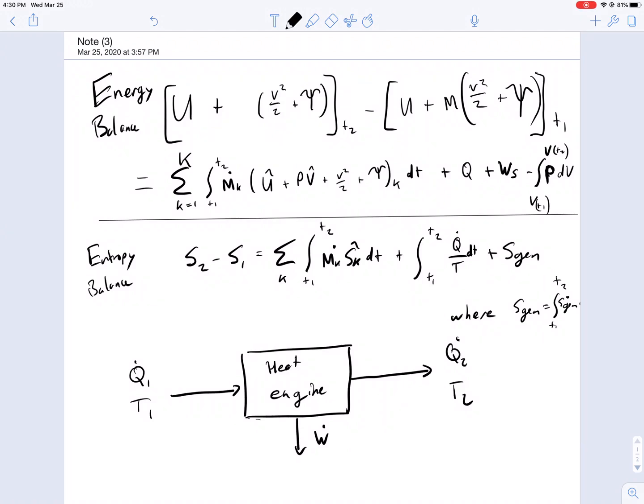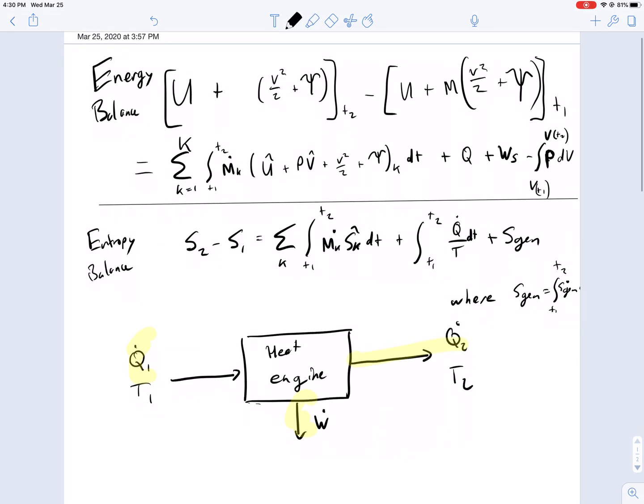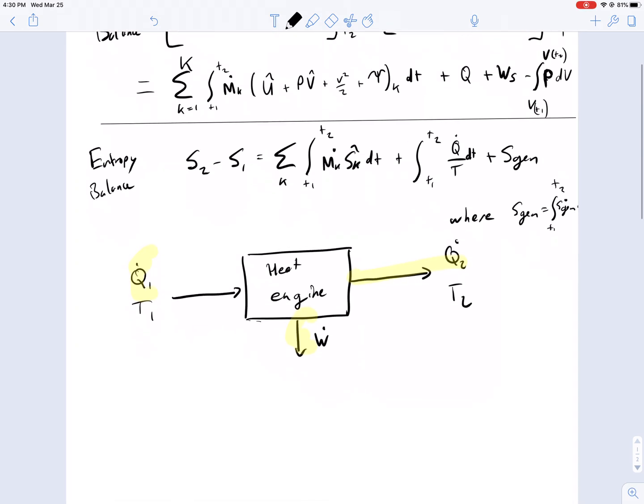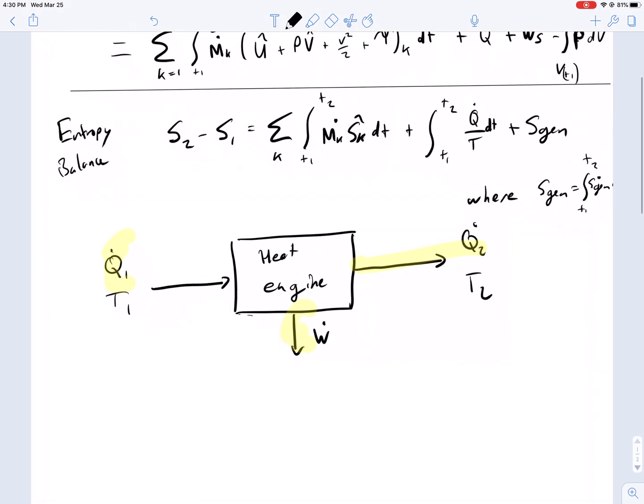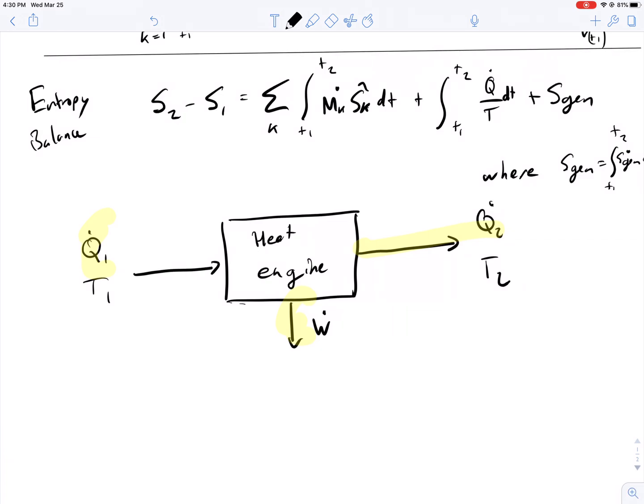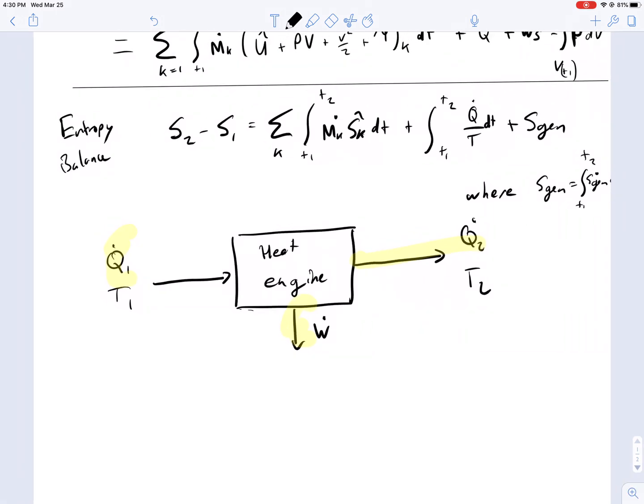One of the cool things we looked at last time was how you cannot have a perfect engine. You can't have an engine where you take all of the Q and convert it only into work. But we can have an engine where some of the Q is dissipated into a different thermal reservoir. And then we can use this to calculate how much work we can get out based on the amount of energy inputs that we're giving to this engine.